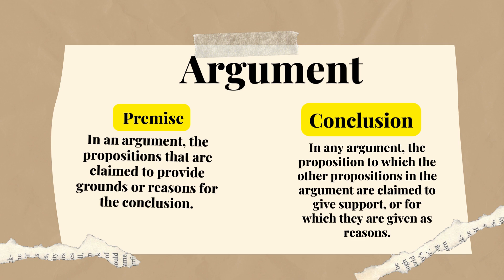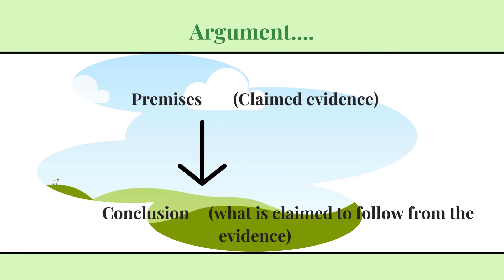I've tried to show this argument with the help of a chart as well. We have the premise — it can be one premise, or it can be two, three, four, five premises — and on that basis we get the conclusion. So the premise is the claimed evidence, and the conclusion is what is claimed to follow from that particular evidence.